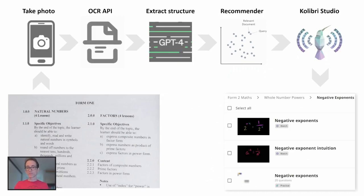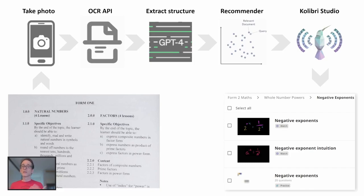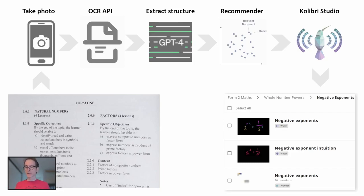So the overall end-to-end pipeline that we've now built, by combining all these pieces together, is: starting with a document like this — whether it's curricular standards or the table of contents from a textbook — taking a picture of that, passing it through OCR to get the plain text, using GPT-4 to extract the structure into a machine-readable format and getting a taxonomy, then using these recommender models that we developed as part of the Kaggle competition to recommend specific pieces of content to different places within that taxonomy, and then bringing that into Kolibri Studio — or other tools and platforms — so that we end up with a draft-aligned content channel that matches that taxonomy. That can then be reviewed, vetted, and augmented by the curricular expert, but this process that would have otherwise taken weeks can be reduced to a matter of hours.